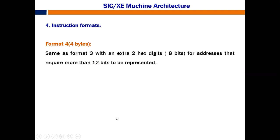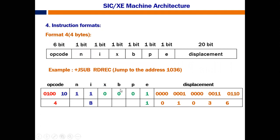Format 4 takes 4 bytes, almost similar to format 3, but with an extra 8 bits. This is used for addresses that require more than 12 bits. In format 3 we had 12-bit displacement; in format 4 the displacement is increased to 20 bits. The structure is: 6-bit opcode, 6 bits for NIXBPE (each 1 bit), and 20 bits for displacement. When E is 1, it indicates format 4.